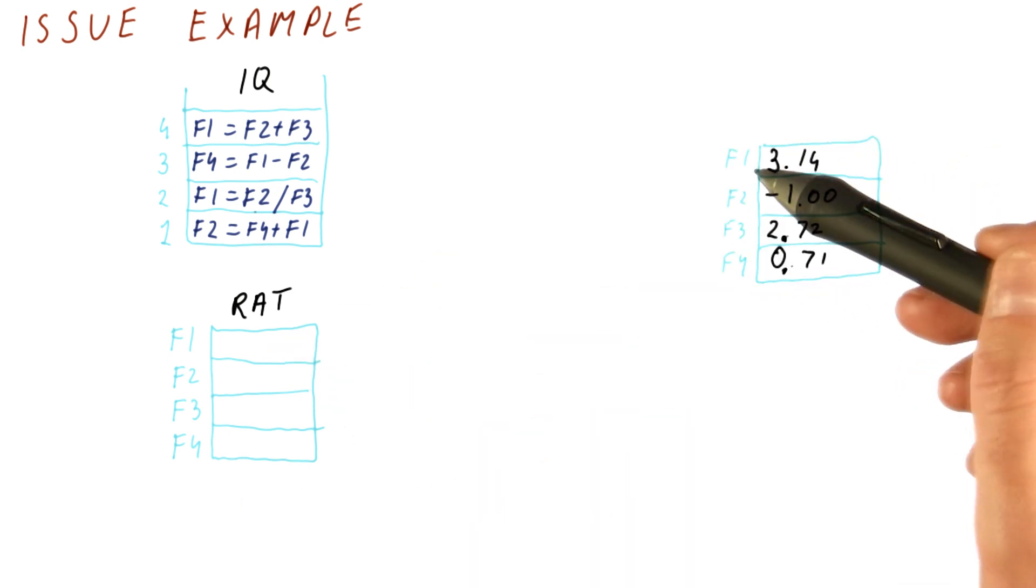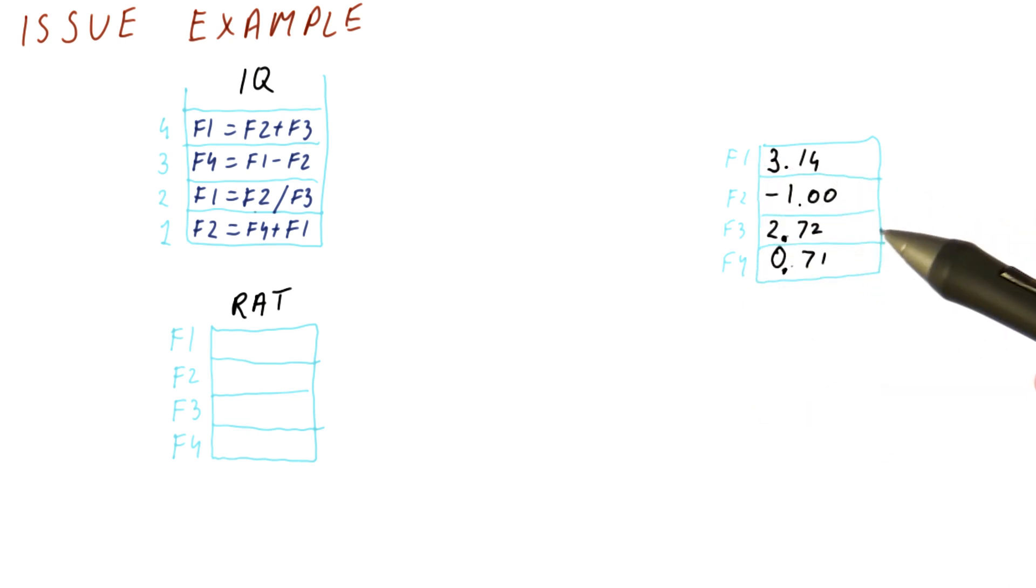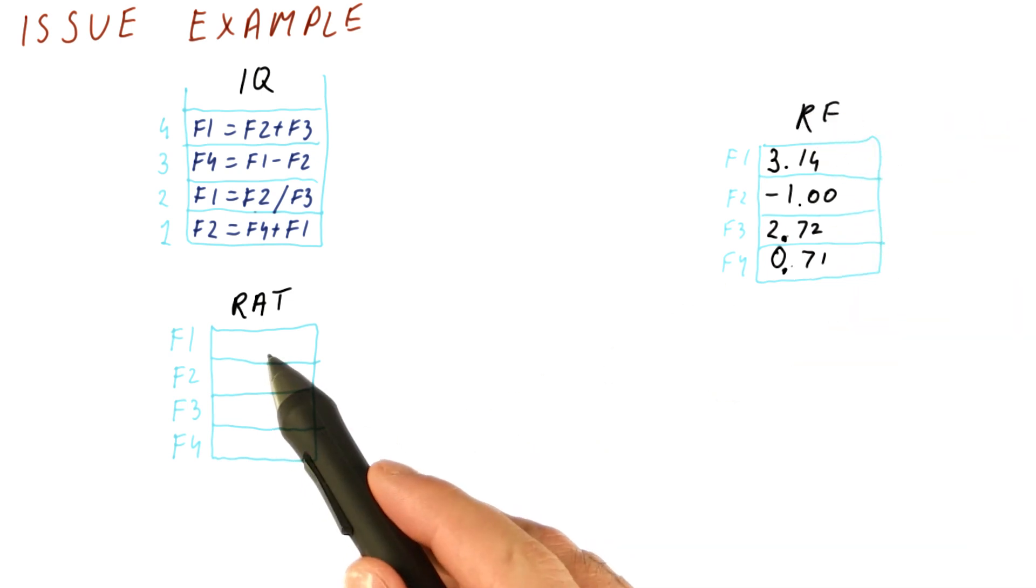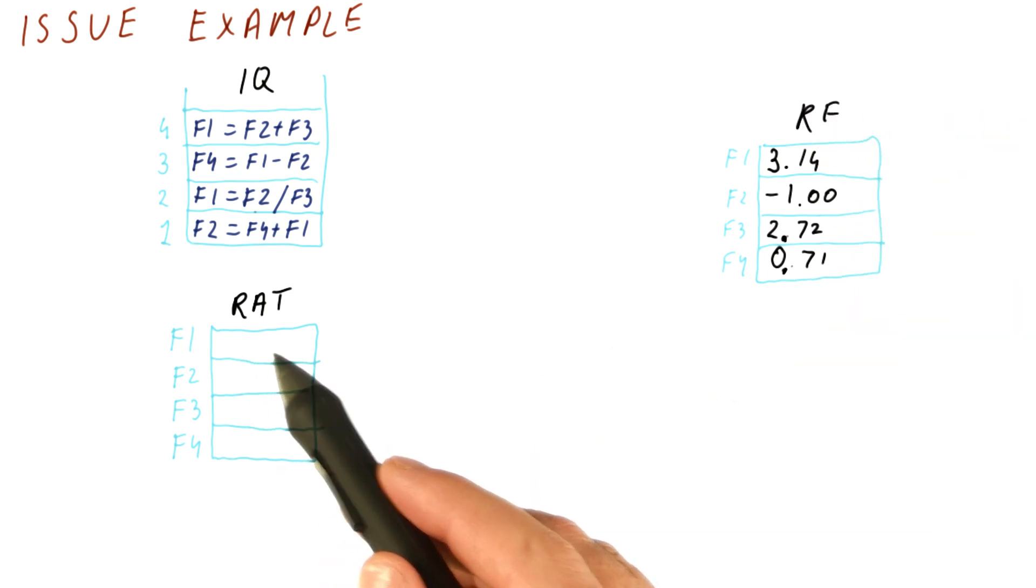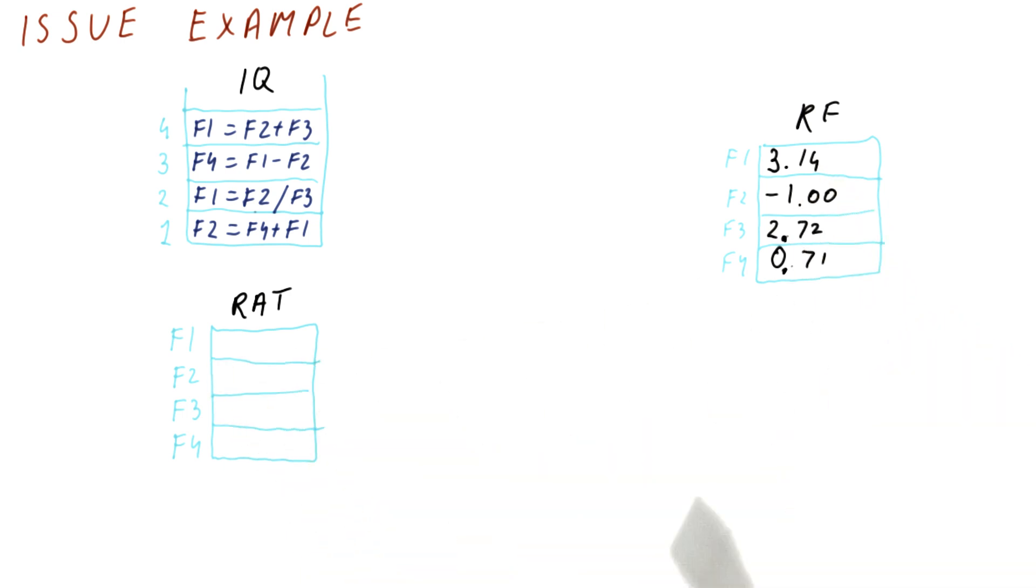This is our register file. We have four registers, and these are their actual values. When we go through the example, we will actually compute with them. Again, this is the register file. The RAT, when it's empty, says that basically this means that F1 can just be read from the register file. You don't have to wait for anything.